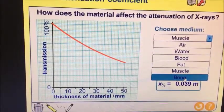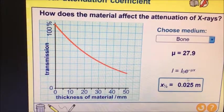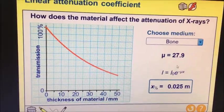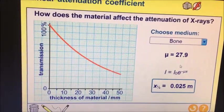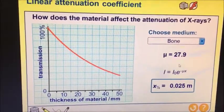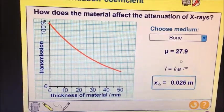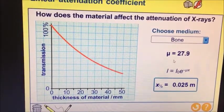But the one, of course, that's the most attenuating is bone. So in just two and a half centimeters, the value has gone down by half. So the bone absorbs a lot of x-rays, and that's why they show up white on your x-rays themselves.